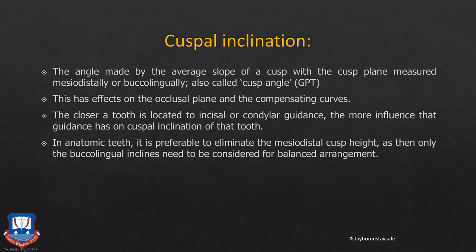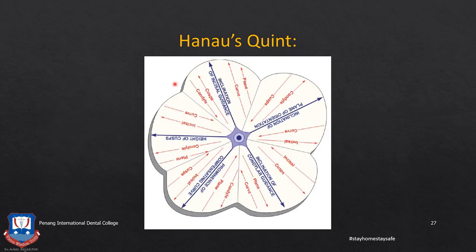The fifth factor is cuspal inclination — the angle made by the average slope of the cusp with the cuspal plane, measured mesiodistally and buccolingually; also called the cuspal angle. The slope of the occlusal plane, the compensating curve, and the cuspal incline are all interrelated. The closer a tooth is located to the condylar guidance, the more influence the guidance has on its cuspal inclination. In anatomic teeth it is preferable to eliminate the mesiodistal cuspal inclines so that only buccolingual inclines need to be considered. These five factors — condylar guidance, incisal guidance, plane of occlusion, cuspal inclination, and compensating curve — constitute the Hanau Quint.